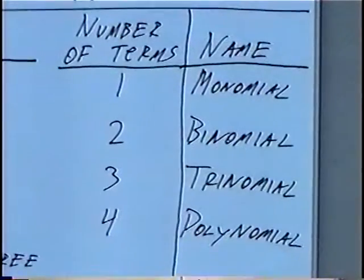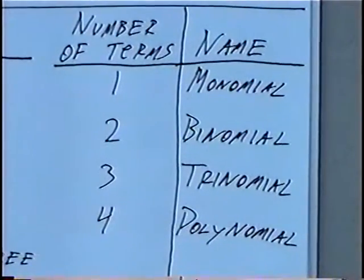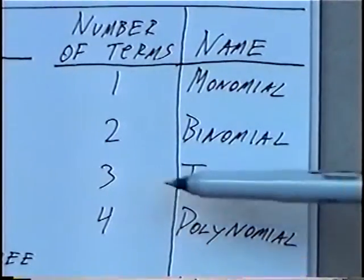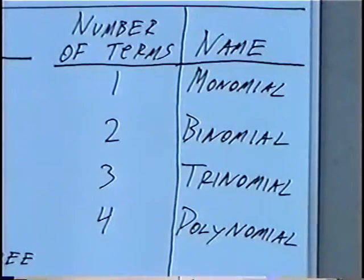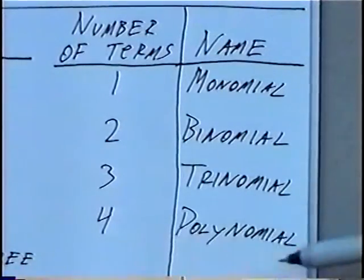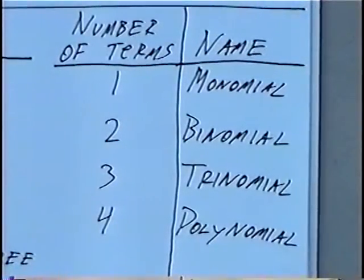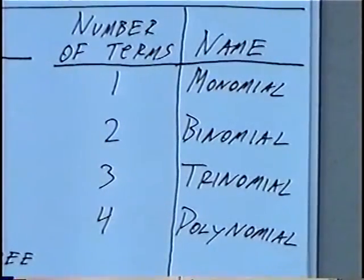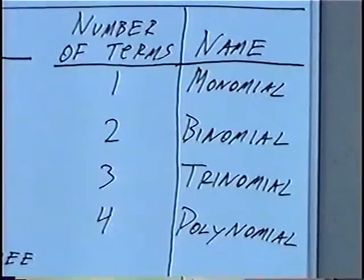The second table classifies by the number of terms. If you have a single term, that's a monomial. Two terms is a binomial. Three terms is a trinomial. Four terms is a polynomial. Anything above four is also going to be a polynomial — for example, five terms is also a polynomial.